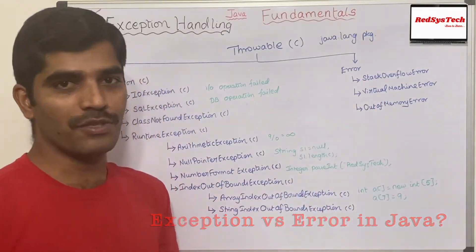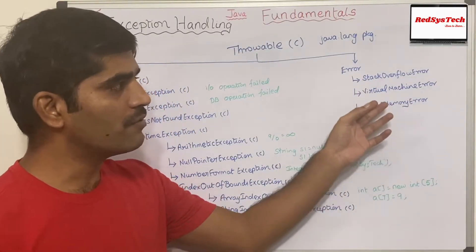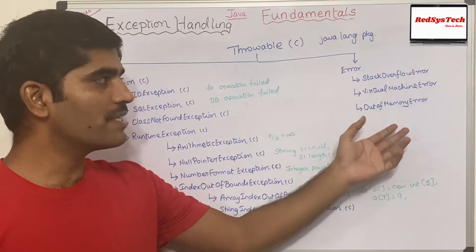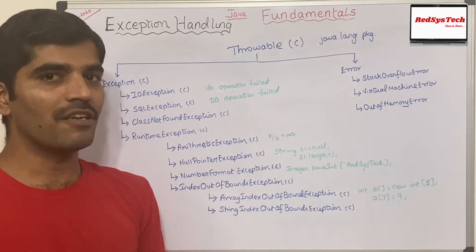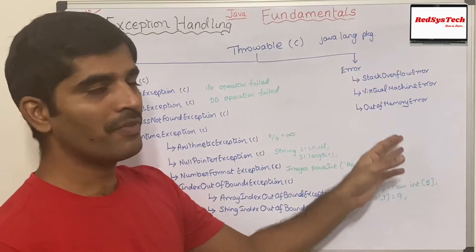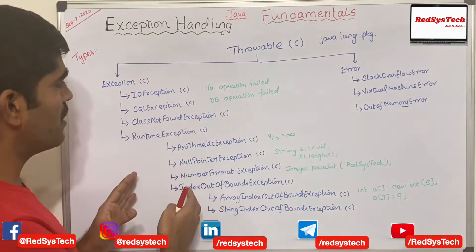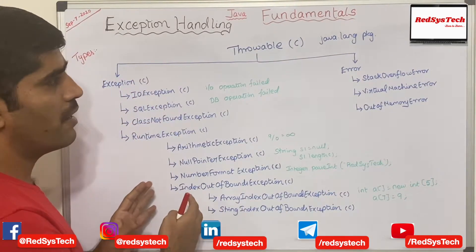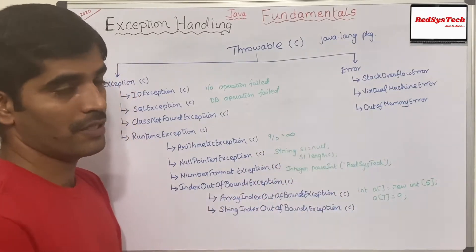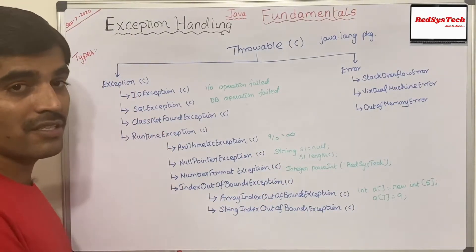Exceptions are not caused by any resources, but errors are caused by the lack of resources — for example, stack overflow, virtual machine error, or out of memory error. If the memory is not sufficient to handle the program, it will throw an error. So errors are thrown by resources, not exceptions.